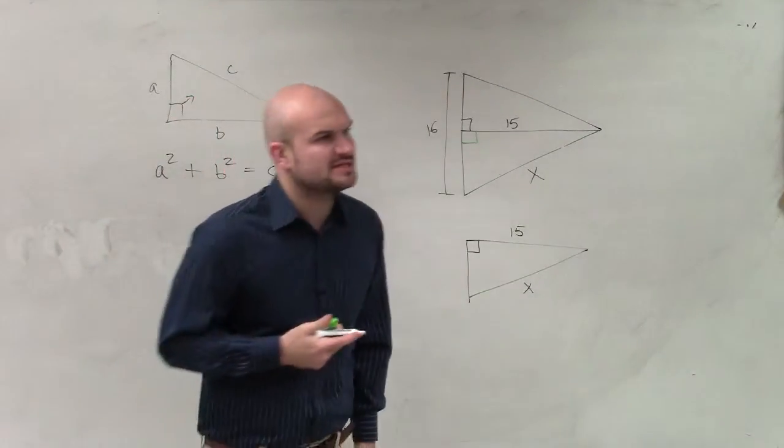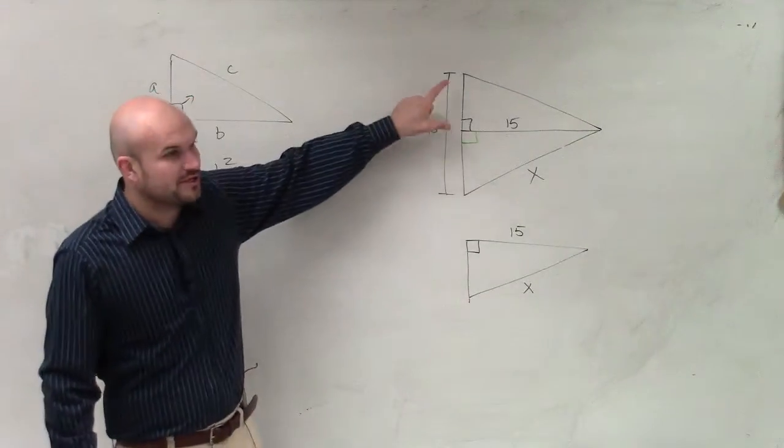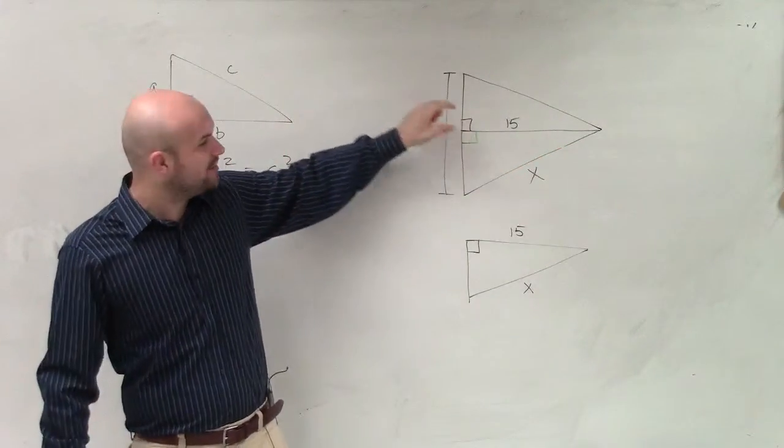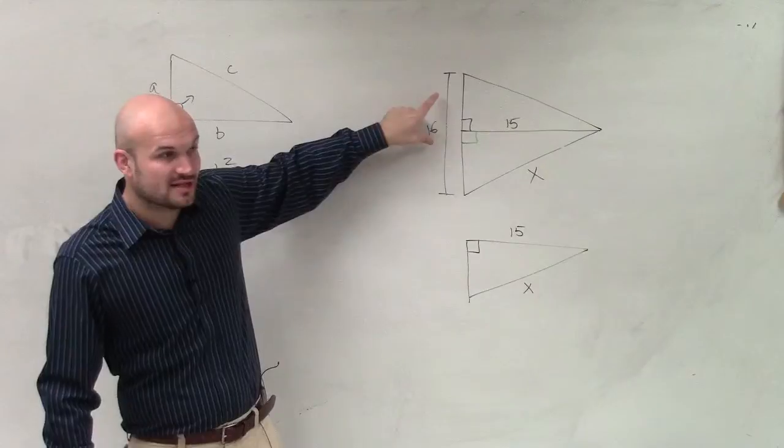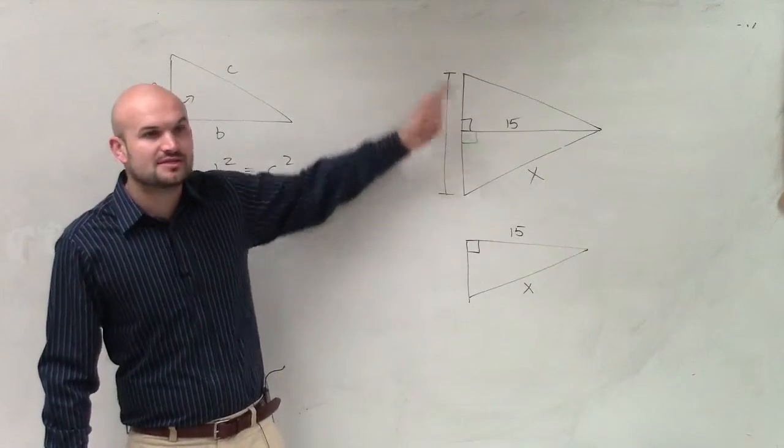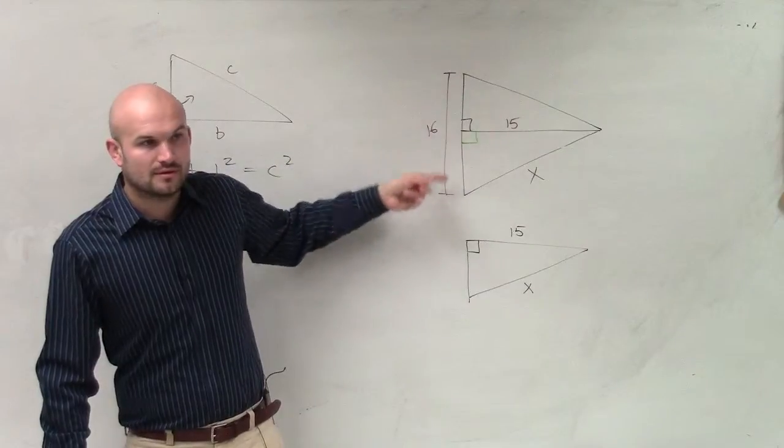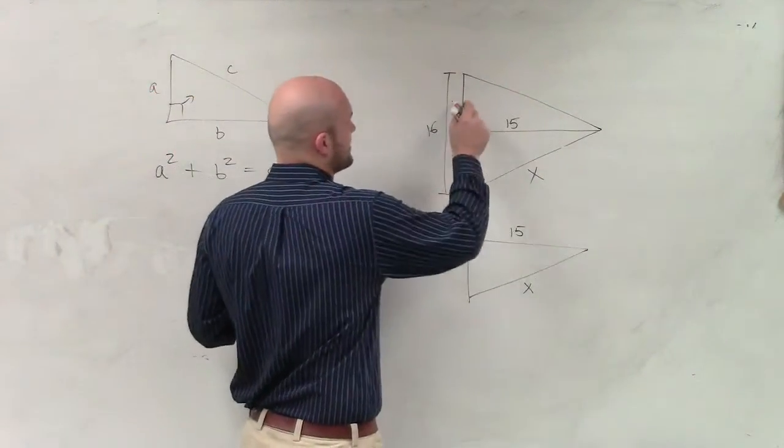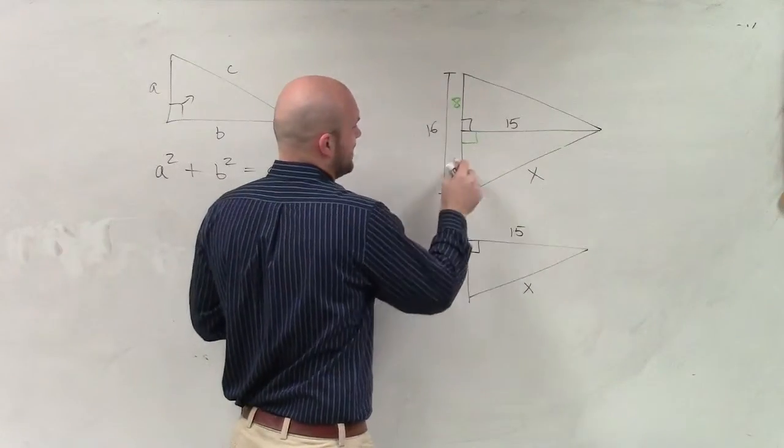And I believe also this says that this is also going to be your bisector. This is your perpendicular bisector. I don't have the exact problem right in front, but it says this is going to cut this in half. So if this whole side is 16, what would you then assume that both of these sides are going to be? 8 and 8. So now we can say that that's 8 and that's 8.